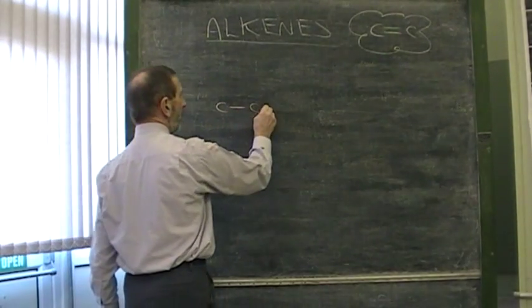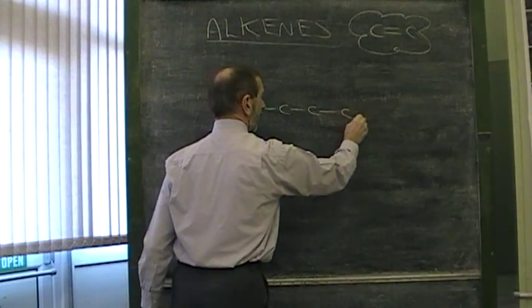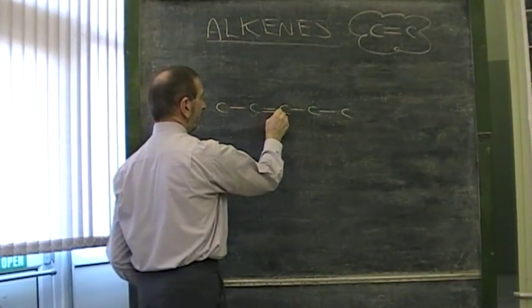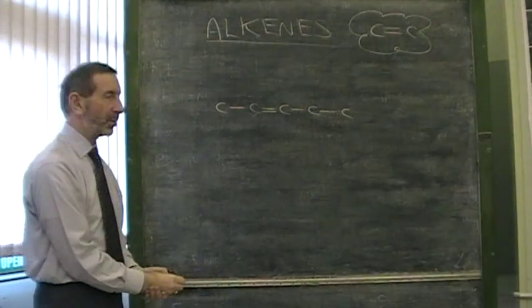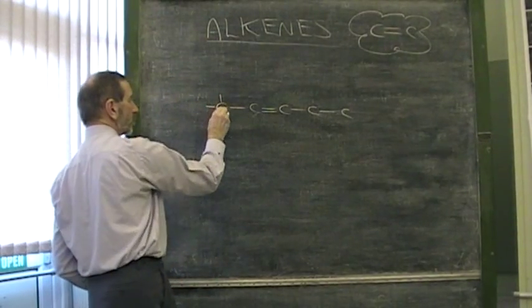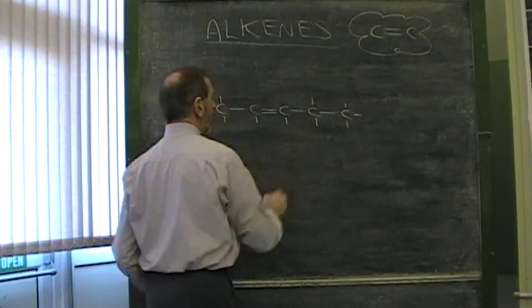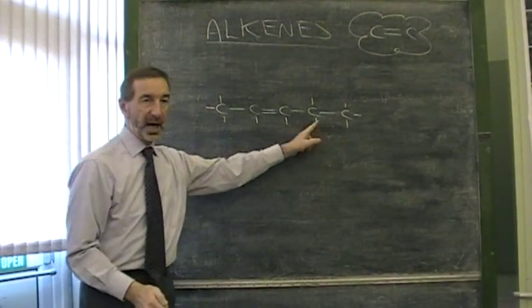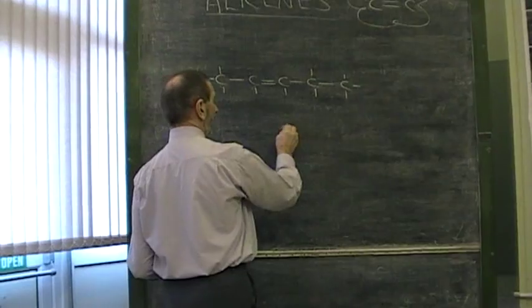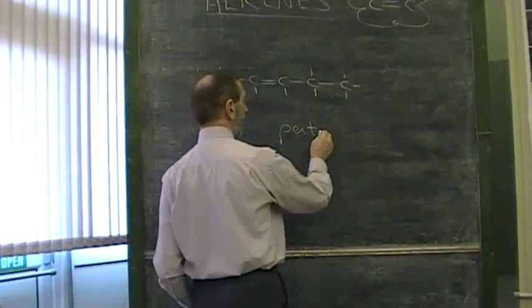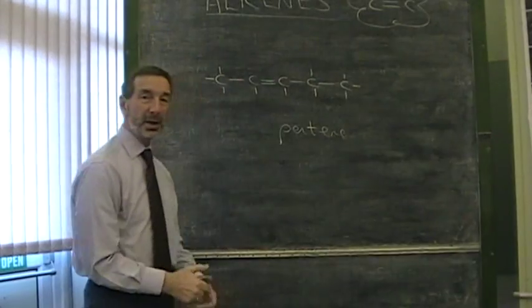Suppose, for example, we had a molecule that had, let's say, five carbon atoms and a double bond in that position there. What name would that have? Well, we apply the rules that we apply to any molecule. The longest carbon chain here is five, so we're looking at pentane. Pent. It's pentene, isn't it? Pentene. But is that good enough?